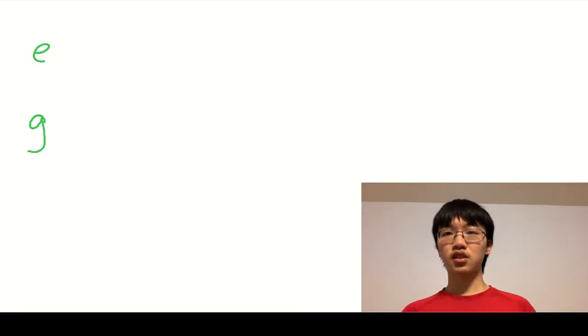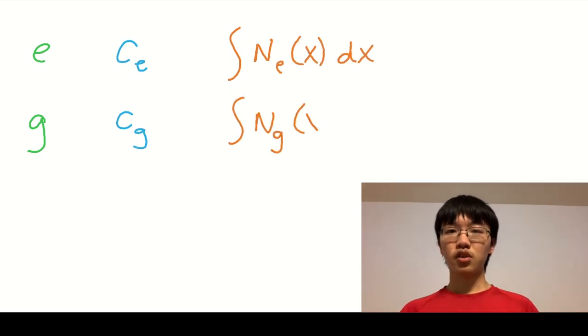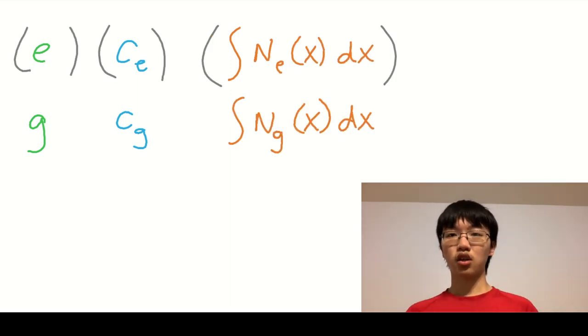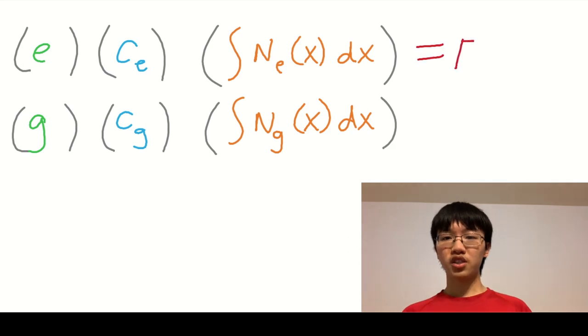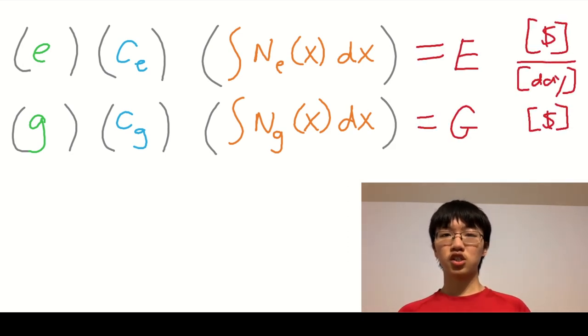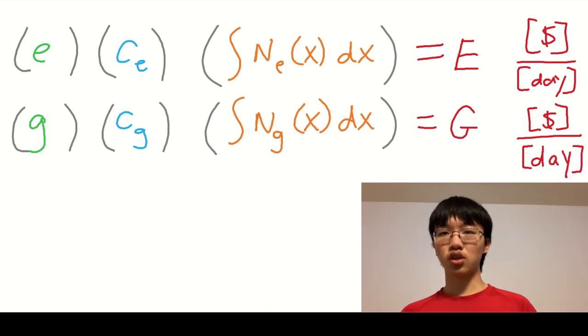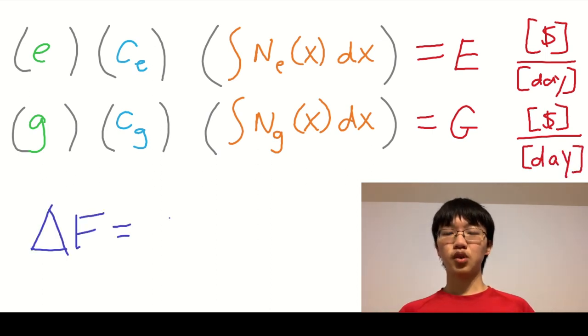Doing the same with diesel gasoline trucks, we can compute the dollars spent per day on refueling diesel gasoline trucks along the corridor. We call this big G. Finally, we can find a cost reduction by transitioning to electric trucks delta F by computing big G minus big E.